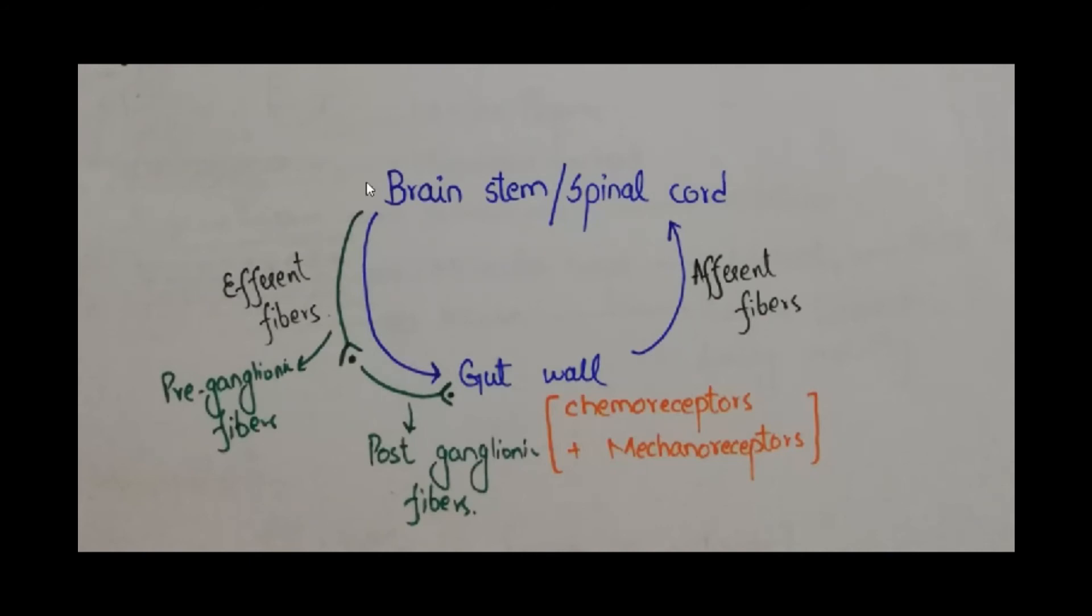Now the information is processed within the brainstem or spinal cord and it is then sent down to the gut by means of efferent fibers. These efferent fibers are further divided into two types, the preganglionic fibers and postganglionic fibers.